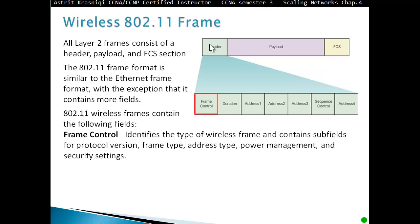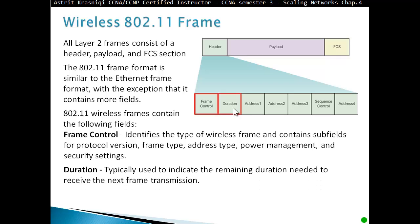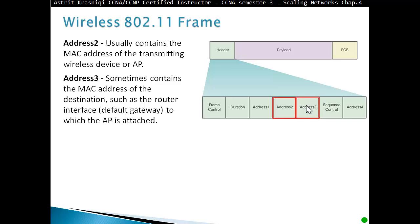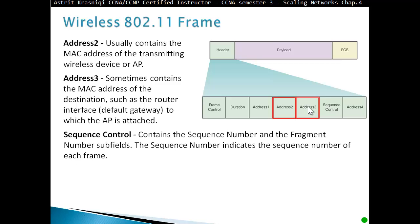In the header we have a frame control field which identifies the type of wireless frame and contains subfields for protocol version, frame type, address type, power management and security settings. Then we have a duration field, typically used to indicate the remaining duration needed to receive the next frame in the transmission. Address 1 field usually contains the MAC address of the receiving wireless device or access point. Address 2 usually contains the MAC address of the transmitting wireless device or access point. Address 3 sometimes contains the MAC address of the destination, such as the router interface default gateway to which the access point is attached.